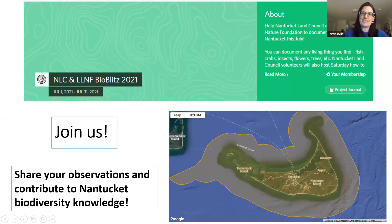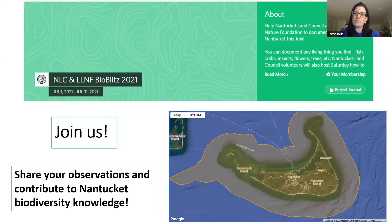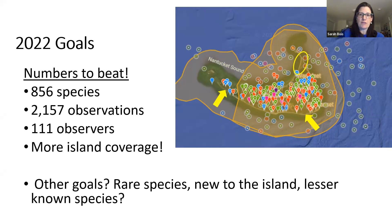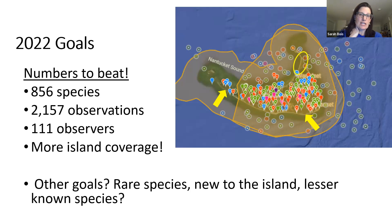I hope the dog vomit slime mold encourages you to join us for iNaturalist in general and certainly for the bio blitz in July. It's a great way to share observations and contribute to biodiversity knowledge. We're going to have some group guided walks to explore different areas. Our goals this year include beating last year's numbers and targeting under-observed areas — parts of Coatue and Coskata, Tom Nevers, and Tuckernuck, where there were very few observations.